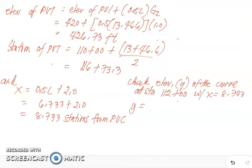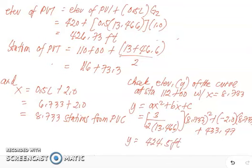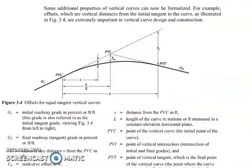Using the parabolic equation y = ax² + bx + c, our coefficient a equals 3 divided by (2 times 13.466), x is 8.733 squared, plus b equals negative 2.0, and c is 433.47. Simplifying, y = 424.5 feet, which matches the elevation stated in the problem. This confirms all our calculations are correct.